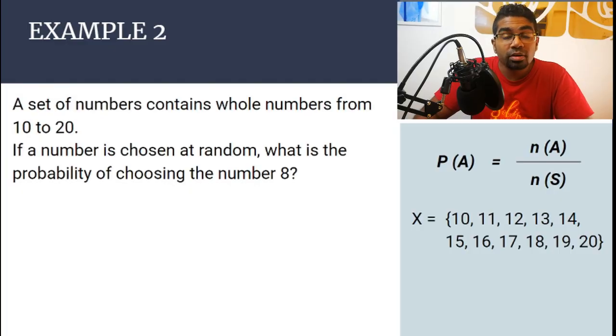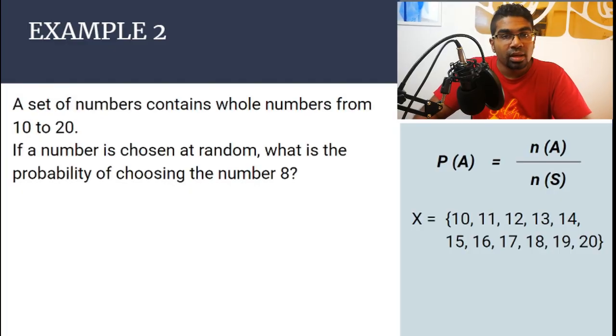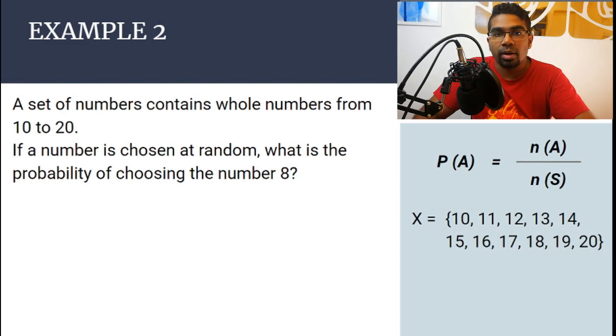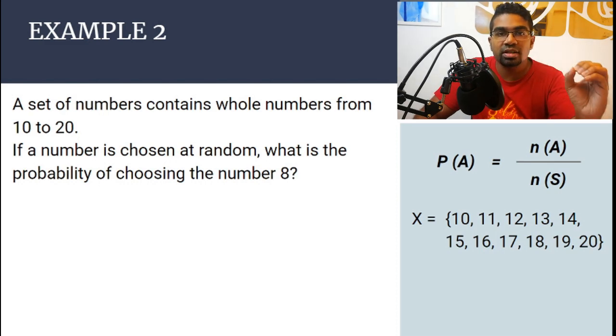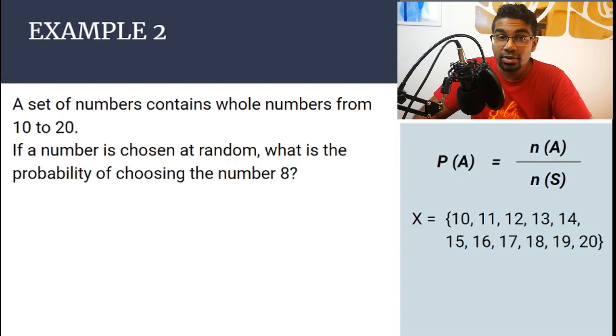When the probability of an event is 0, that means that there is no chance that it is going to happen. There is 0 chance that it will occur — it will definitely not happen. Let's look at this example.